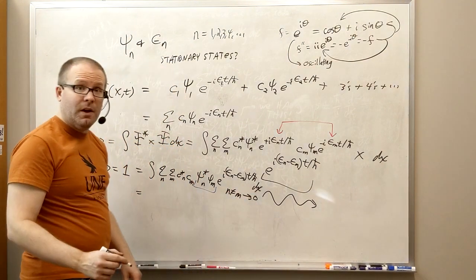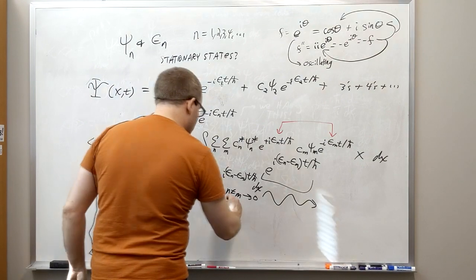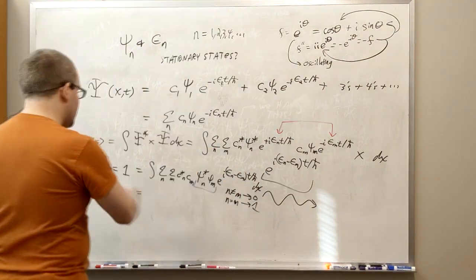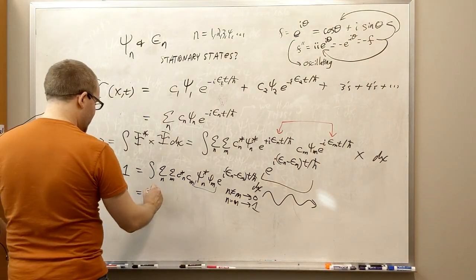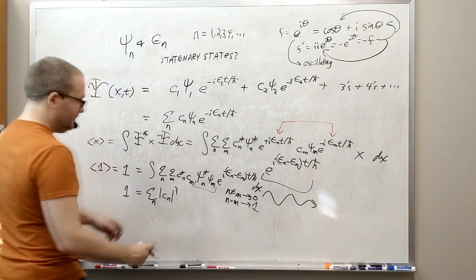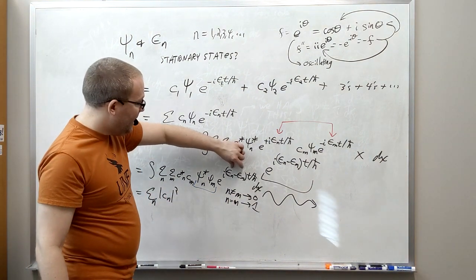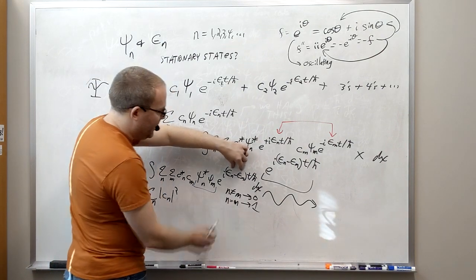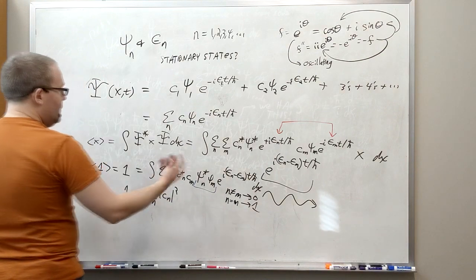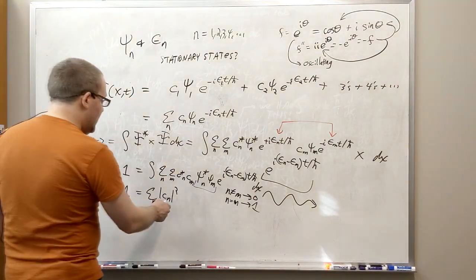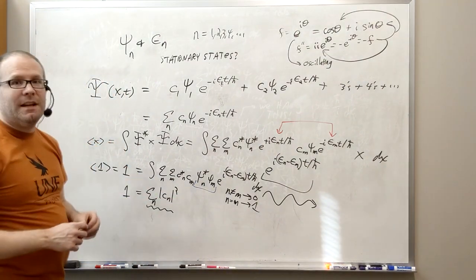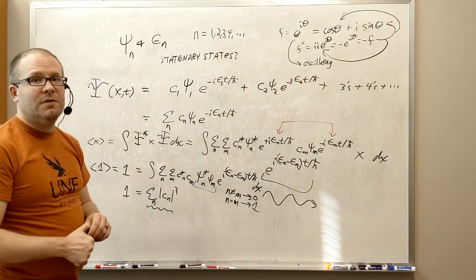And it turns out that these stationary states are what we call orthonormal, meaning if they are different, if n doesn't equal m, then you automatically get zero. It's like taking the dot product of two perpendicular vectors. And if n equals m, you get one from the normalization we had to set up for these. And so what you'll end up with is that one has to equal a sum on n of the absolute value of c_n squared, because you'll have e_n minus e_n. So that gives you e to the zero, gives you one. And so you'll end up with one equals this. So your only constraint when you're constructing this wave function is that the sum of all of the coefficients, absolute value squared, has to equal one. Relatively easy to ensure that you construct.